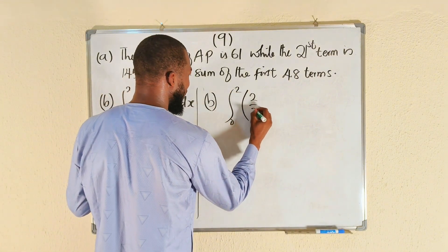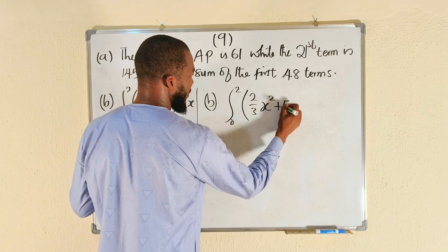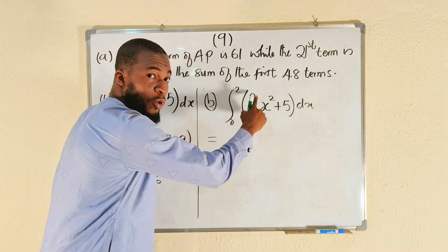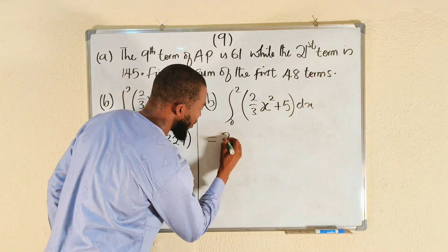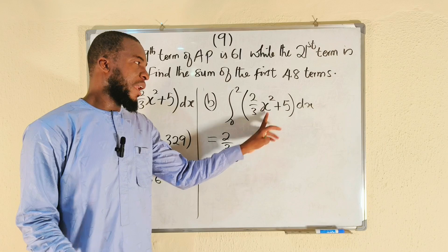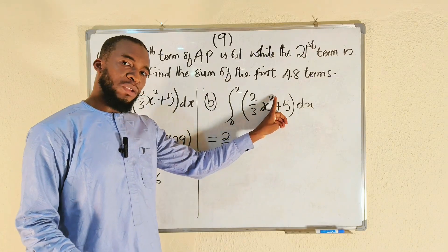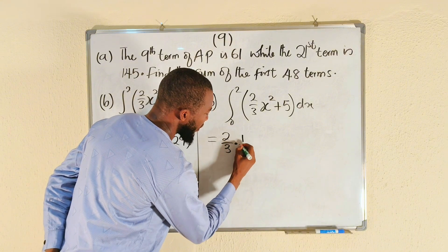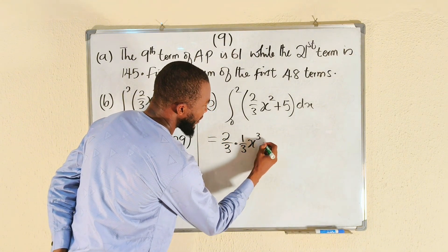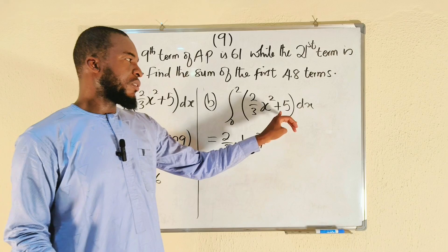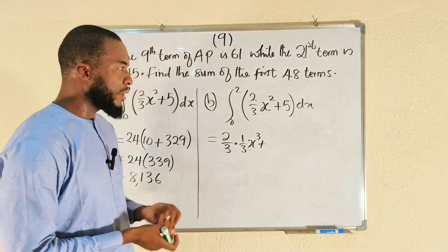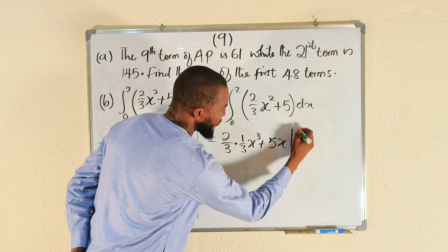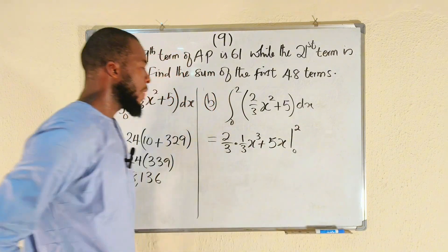This is equal to... this constant we bring it down. Once you integrate x squared, you have to add 1 to the exponent, it's going to become 3, then you divide by 3. So this is simply 1 divided by 3 multiplied by x to the power of 3. Plus, once you integrate a constant, just attach that variable x, so we have 5x. The limit of integration is from 0 to 2. All you have to do is plug in 2, subtract plug in 0.